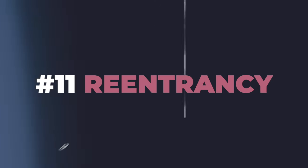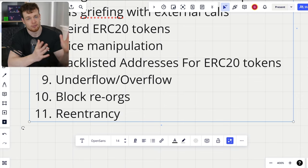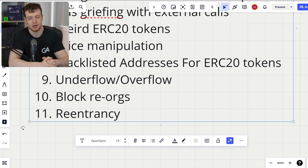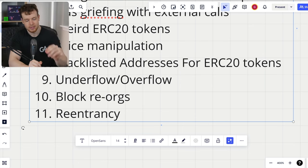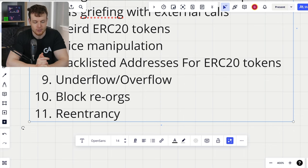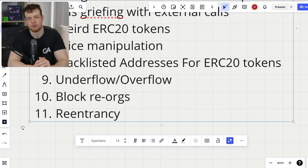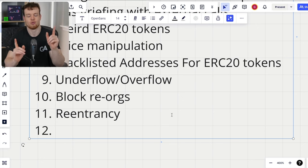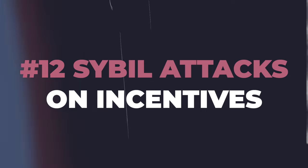Number eleven is reentrancy. Look at those external calls, look at external functions available, check for non-reentrant modifiers, and look for ways to re-enter across contracts. If you're not completely familiar with all the different types of reentrancy, check out the complete guide to reentrancy video in the description below.